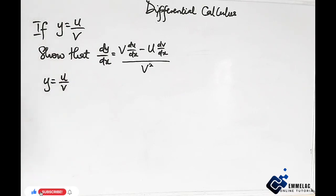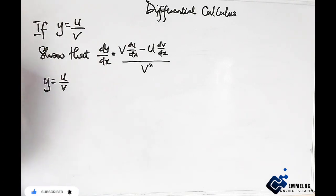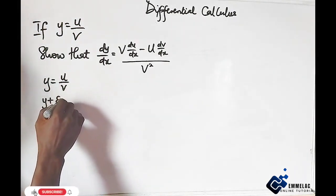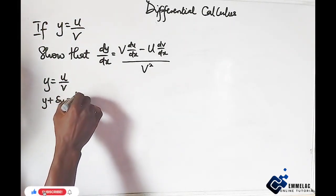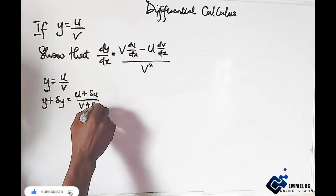So to this point now, what we need to do is to implement an increase in the various variables. Which implies that y plus change in y equals u plus change in u all over v plus change in v.